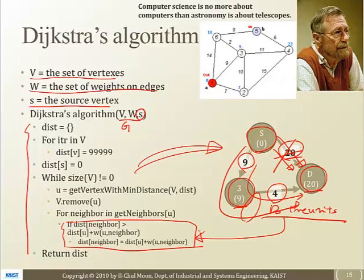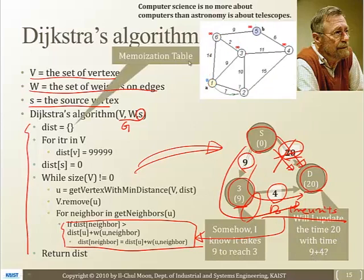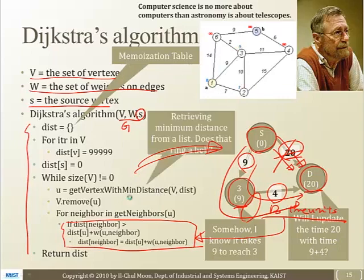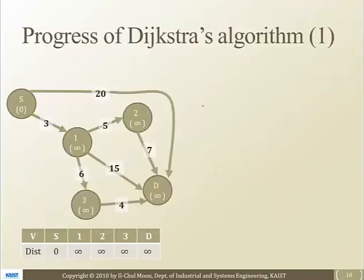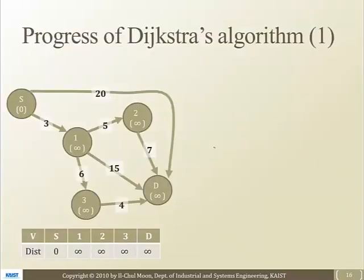Actually, to understand how the Dijkstra algorithm works, the best way is to see how it works. So I gave you a little bit of this slide set. Somehow, I know it takes 9 to reach 3, and will I update the time with time 9 plus 4? Here, we have the memoization table. Retrieving minimum distance from the list. This solution set, this algorithm, is very similar to the one that we already discussed in the dynamic programming week.